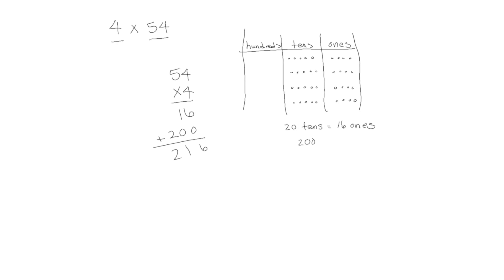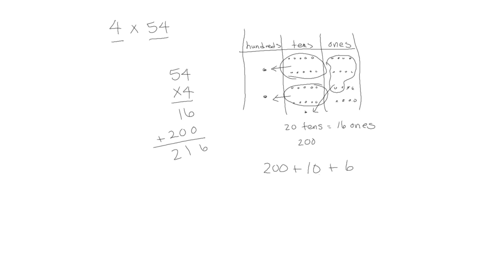We know from our work with place value that when we have 10 in a group we can exchange them for the next highest place value unit. So we have 10 ones — we exchange that for 1 ten, leaving us 6 ones. Here we have 10 tens, which we can exchange for 100, and another 10 tens exchanged for another 100, leaving 1 ten and 2 hundreds. So 200 plus 10 plus 6 gives us 216, the same as we got in the partial products model.